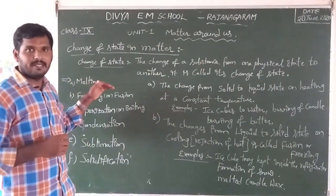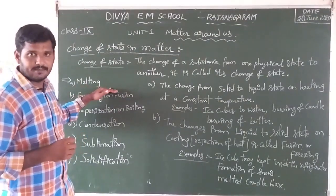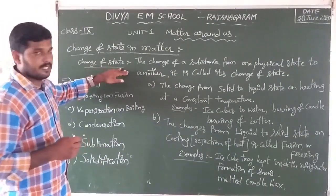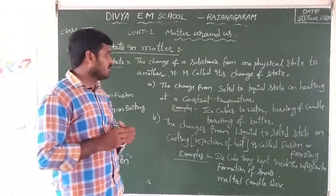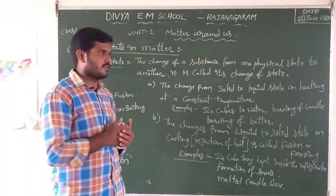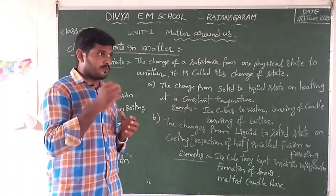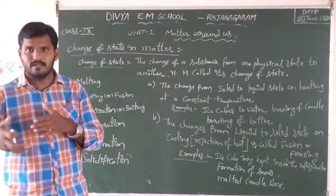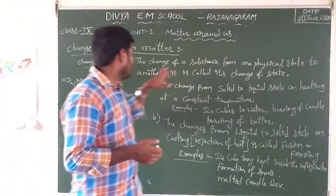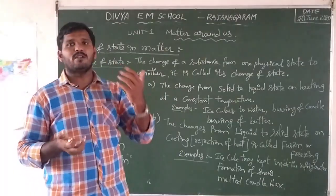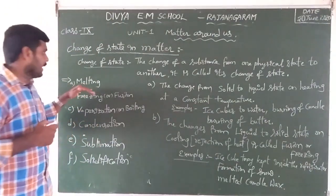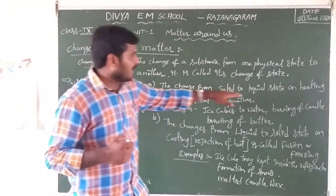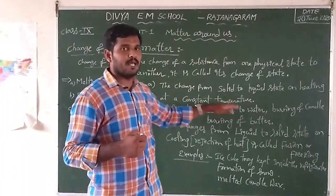We will briefly discuss each one. First of all, what is the meaning of change of state? The change of a substance from one physical state to another physical state is called change of state. A small example: water cubes are taken in a bowl, and then temperature is added to that bowl. Then the solid state converts into a liquid state — one physical state converting into another. When energy is applied to that body, that is the first one: melting. The definition of melting is the change from solid state to liquid state on heating at a constant temperature.